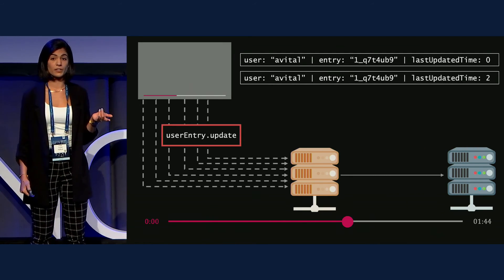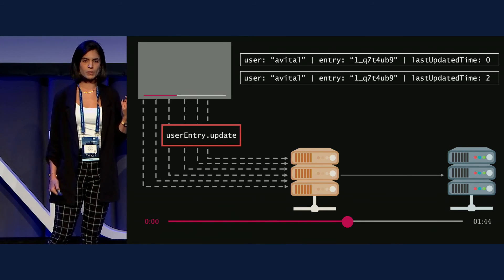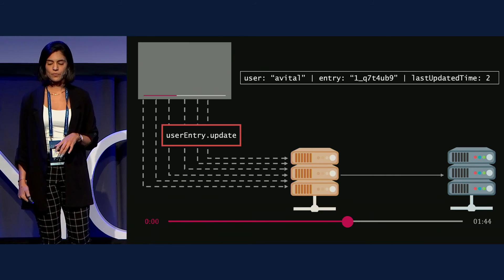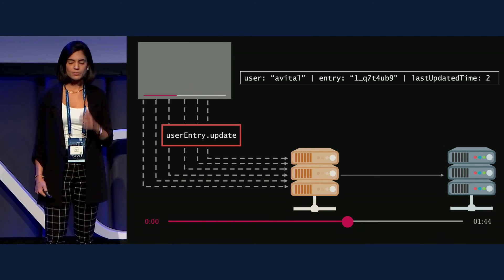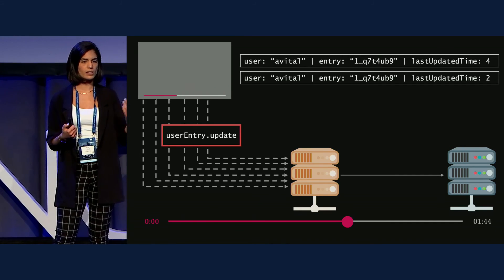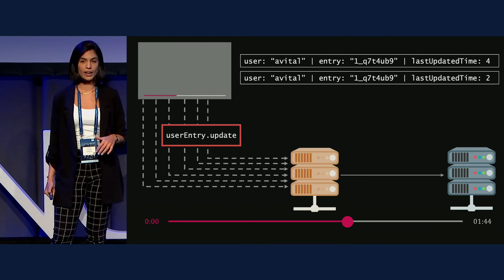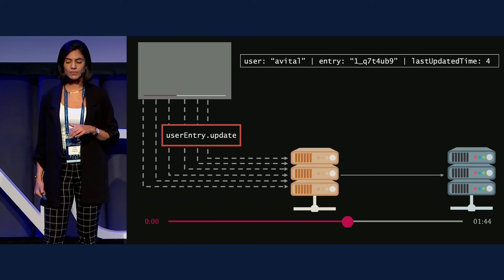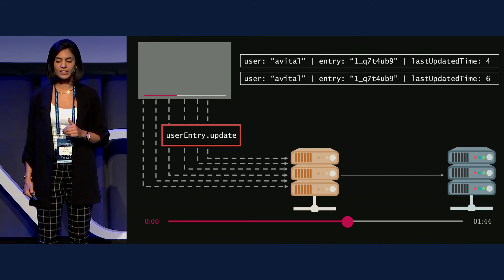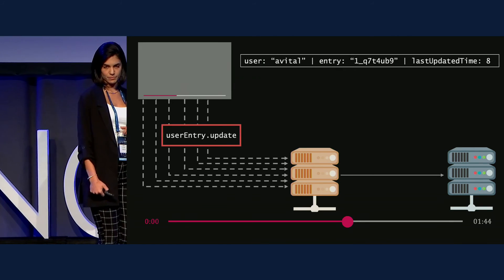When a message comes in saying 'Avital's watched two seconds of this video,' it goes to the new server and gets recorded. Then when a new message comes in saying 'Avital's watched four seconds,' the previous two-second message becomes totally useless — it gets deleted and the four-second message goes into the cache. Then 'Avital's watched six seconds' comes in — the four seconds gets deleted from the cache, replaced by the new value. And so on.